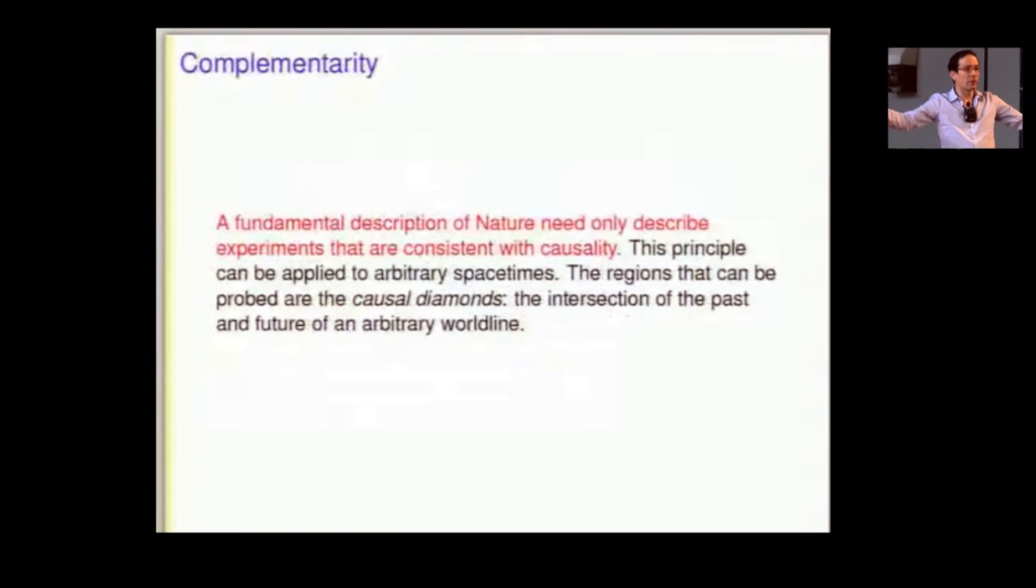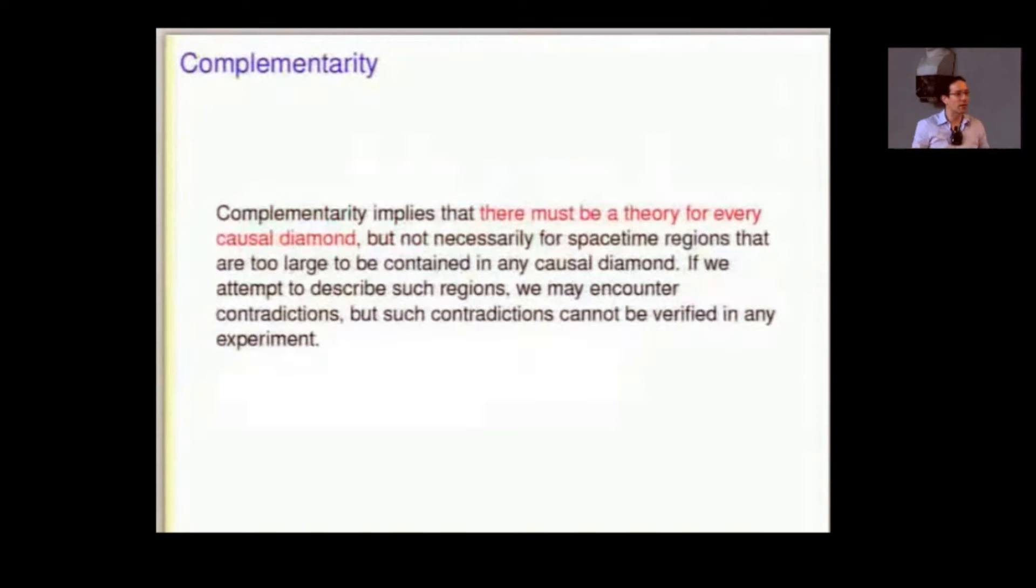And you look at the past light cone of the endpoint of that world line and the future light cone of the starting point that's called a causal diamond. And that denotes a region which is in some sense maximal. You can't probe anything that's larger than that causal diamond consistent with causality. Now, you have to have a theory for every such causal diamond, otherwise physics is somehow incomplete. But you don't need to have a theory for many of them put together, even if they have overlaps. That's asking for consistency for experiments that nobody can actually perform. And it looks like maybe that's where the problem lies here.